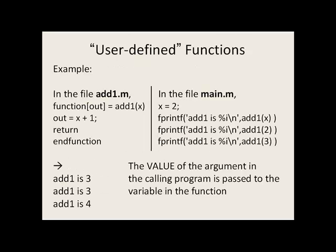Here's one example. We have a program called main.m, and inside of main.m we are going to call the function add1 multiple times. We start off with x equals 2, then we come to an fprintf statement. Add1 is will be printed on the screen, and then we come to a percent i. Because we have a percent i here, we're going to look at some value on the right side of this comma. In this case, it's the value of the function add1, and that takes an argument x as input. So x is 2, so we pass the value 2 to the add1 function.